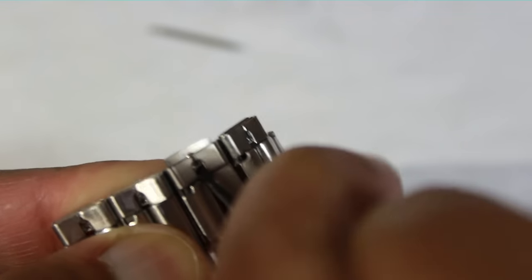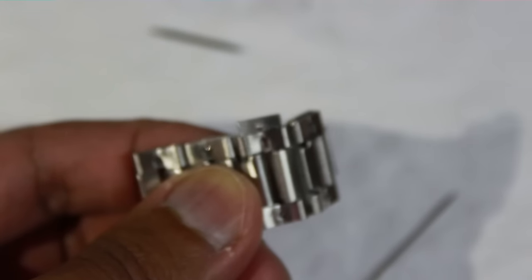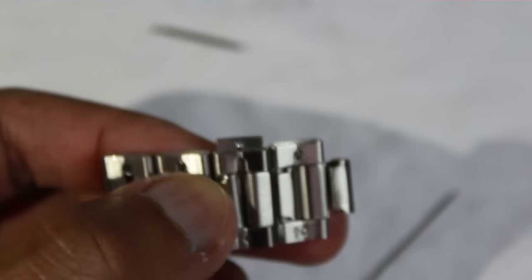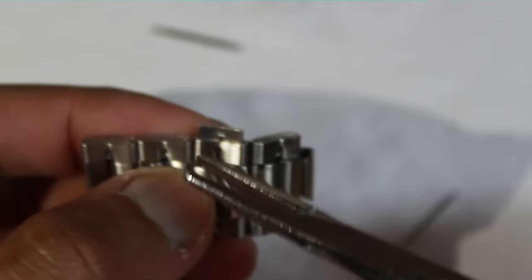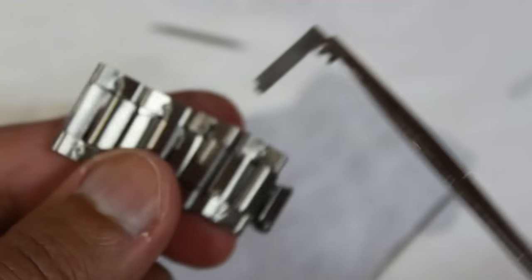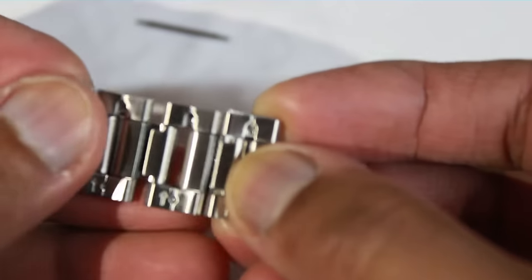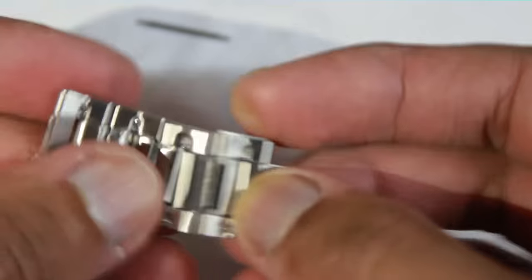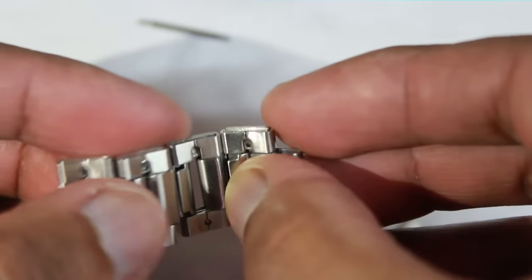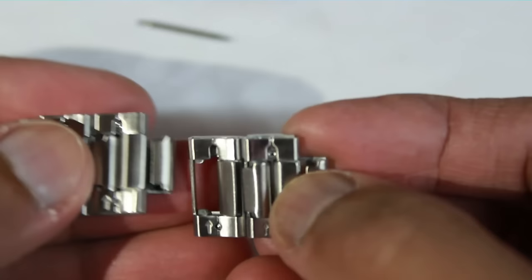All you need to do is just grab your needle nose pliers and just pull it out. There's your locking key. All you have to do next is just fold your links and it should just come off easily. So there you go guys.